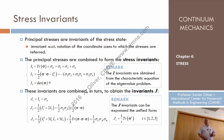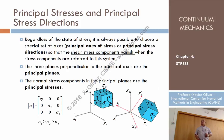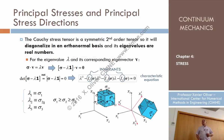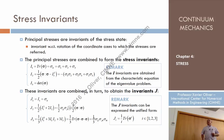What is the third invariant? It's the determinant of σ. In the case of the principal stresses, the determinant of the diagonal matrix is simply σ1 × σ2 × σ3. So the determinant of σ is invariant.